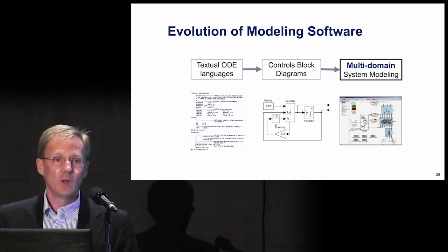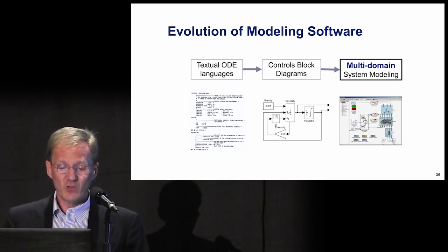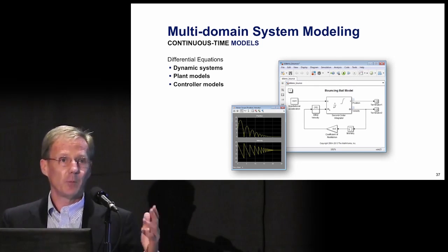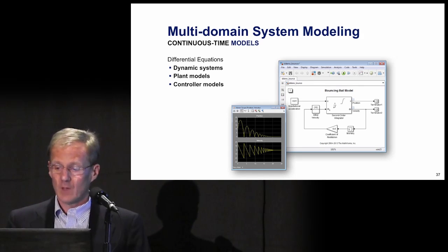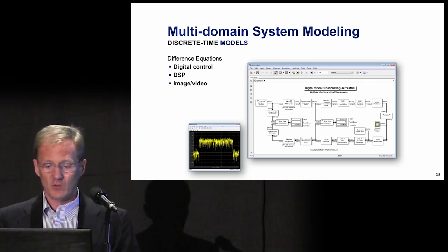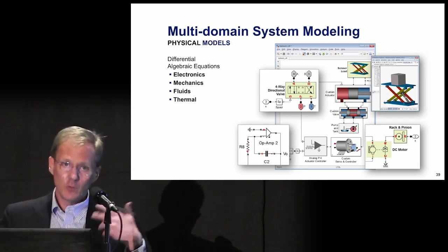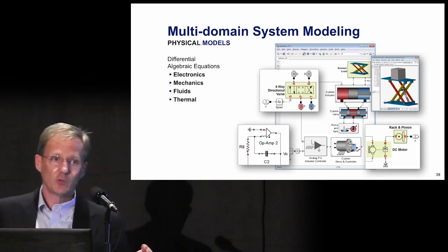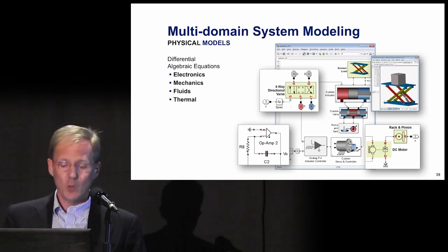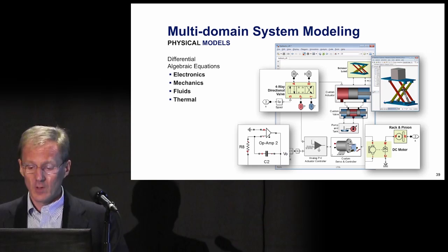I'd like to take a look at the modeling domains that such a concept requires to fully model a system — there are six of them. The first domain is continuous-time models, often used for plant modeling, environment modeling, and analog elements. The second domain is discrete-time controls, enabling digital control, image processing, and video processing. The third domain is physical models, including electronics, mechanical linkages, hydraulics, fluids, and thermal. These models are different than control diagrams because they have bidirectional flow on the diagram lines and are simulated using differential algebraic equations. The physical models have become really important because of a big increase in mechatronics in modern products.